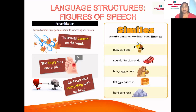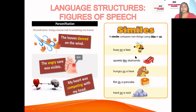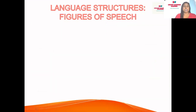Next is a simile, which is very simple. A simile compares two things using the word 'like' or 'as.' If you see 'like' or 'as' in a comparison, you know it's a simile. Examples: 'busy as a bee,' 'sparkle like diamonds,' 'hungry as a bear,' 'flat as a pancake,' 'hard as a rock.' If you see 'as' or 'like' in a comparison, it's a simile.